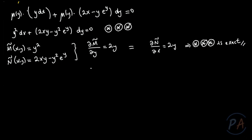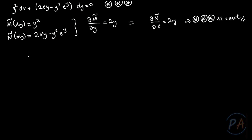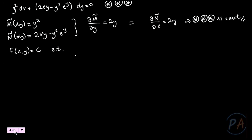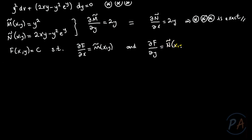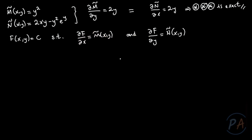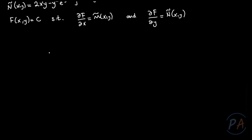Since this equation is exact, it must have a solution f(x,y) = c satisfying: the partial derivative of f with respect to x equals M̃(x,y), and the partial derivative of f with respect to y equals Ñ(x,y). Let me start by choosing ∂f/∂x = M̃(x,y) = y².